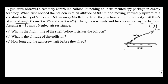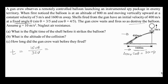The velocity of the shell in the horizontal direction is 400 × cos θ, and since cos θ = 4/5, it works out to be 320 meters per second. The shell needs to cover 1600 meters in the horizontal direction to hit the balloon. So the time taken is distance divided by speed: 1600 / 320 = 5 seconds. The shell hits the balloon in 5 seconds.